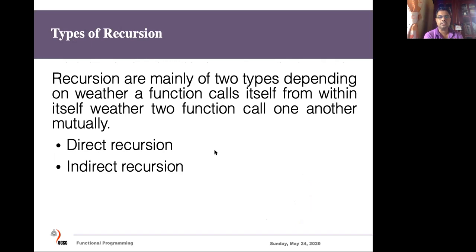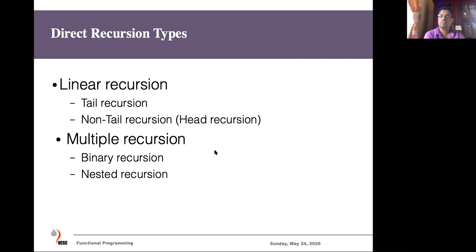In recursive applications we can see two types of recursion: direct recursion and indirect recursion. Under direct recursion, we can identify several types. The first category is linear recursion, where we call the same function within itself only once. If that call is the last statement in the function, we call it tail recursion.